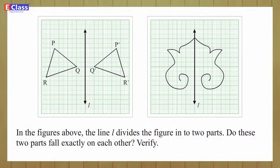In the figure above, the line l divides the figure into two parts. Do these two parts fall exactly on each other? Verify.